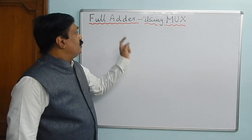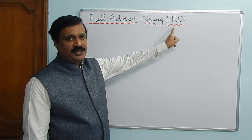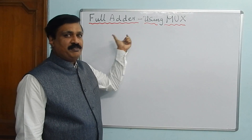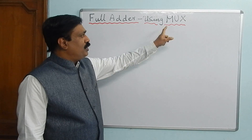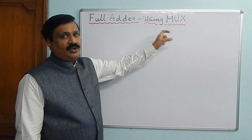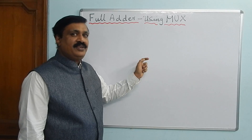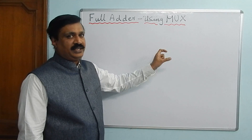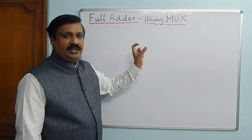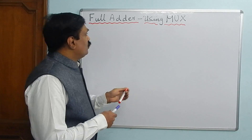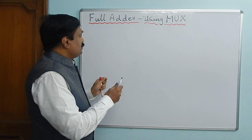Good morning. Today we are going to see Full Adder using MUX, that is multiplexer. In the last class we have seen multiplexer — how to design a multiplexer. Multiplexer means many-to-one: you have many inputs and you are selecting one of the inputs as the output. It is also called a data selector. Now we are going to implement Full Adder using multiplexer.